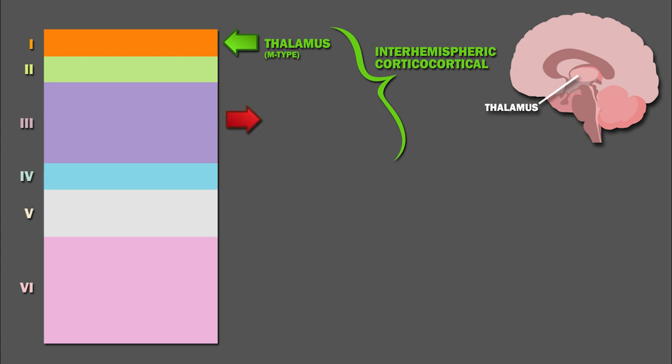Layer 3 is also the principal source of corticocortical efferents, meaning that it signals to other cortical neurons.